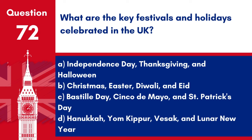Question 72. What are the key festivals and holidays celebrated in the UK? A. Independence Day, Thanksgiving and Halloween. B. Christmas, Easter, Diwali and Eid. C. Bastille Day, Cinco de Mayo and St. Patrick's Day. D. Hanukkah, Yom Kippur, Vesak and Lunar New Year. Answer: B. Christmas, Easter, Diwali and Eid. Key festivals and holidays celebrated in the UK include Christmas, Easter, Diwali and Eid.